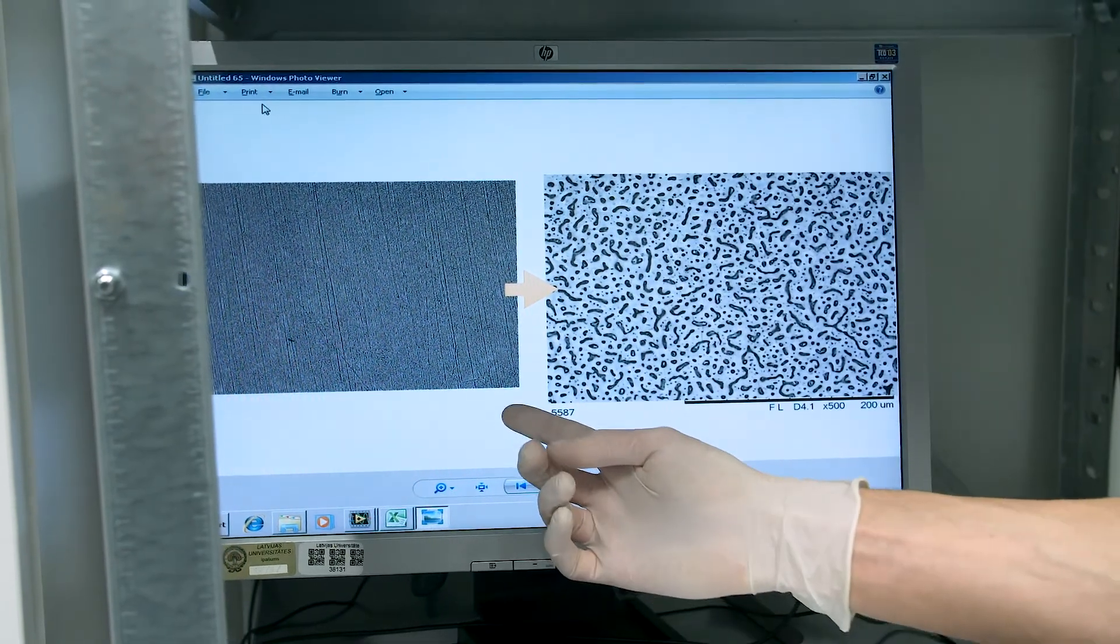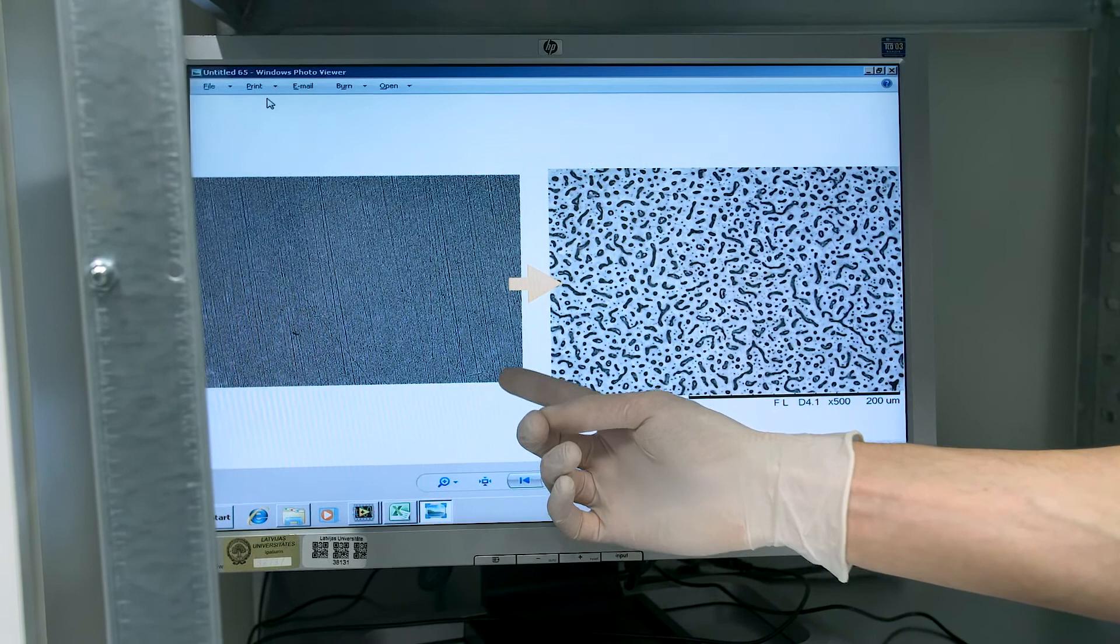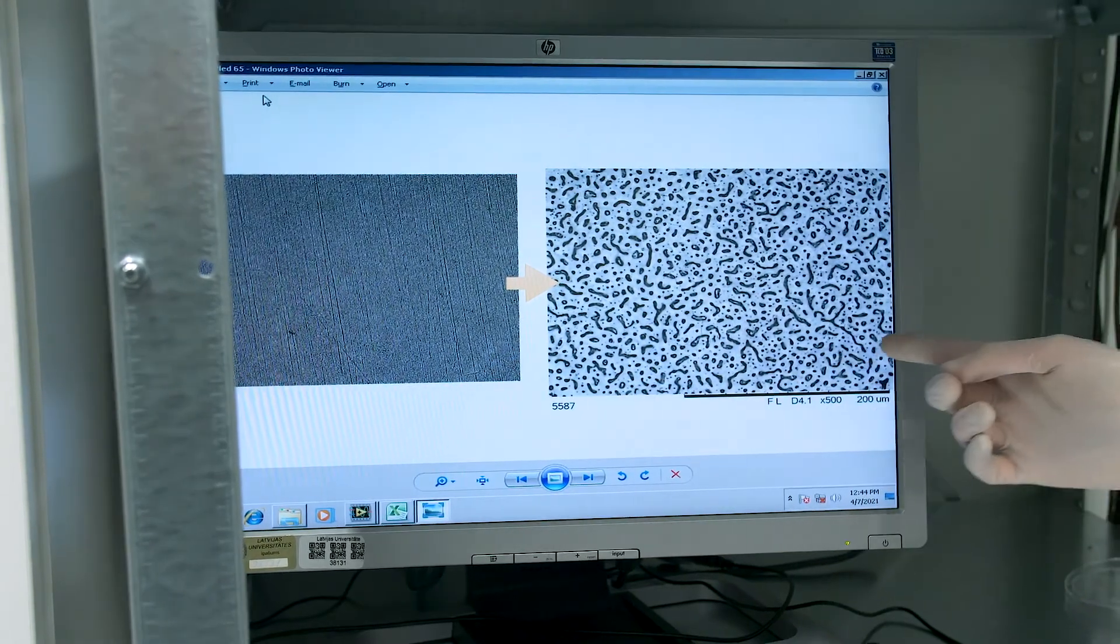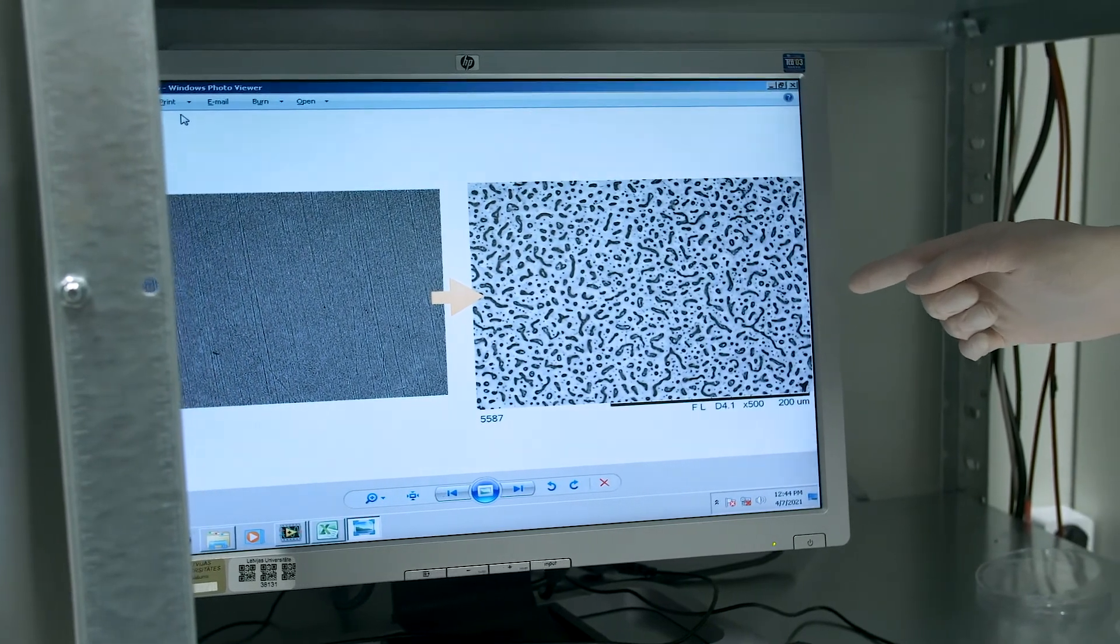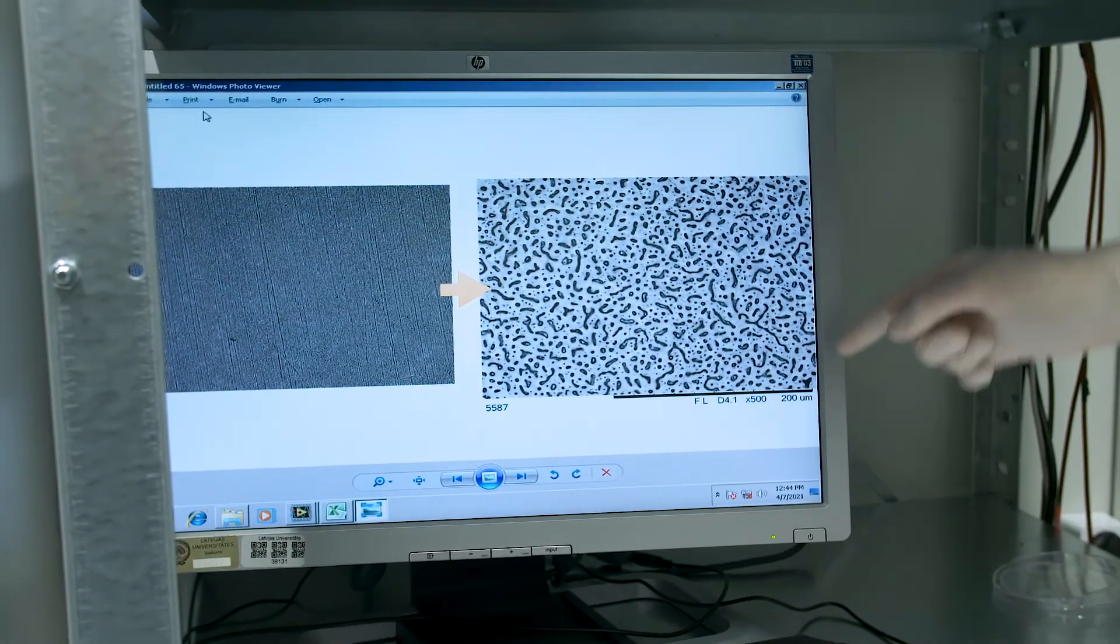As you can see, this is the untreated smooth surface, and this is after plasma electrolytic oxidization. You can see the porous structure.